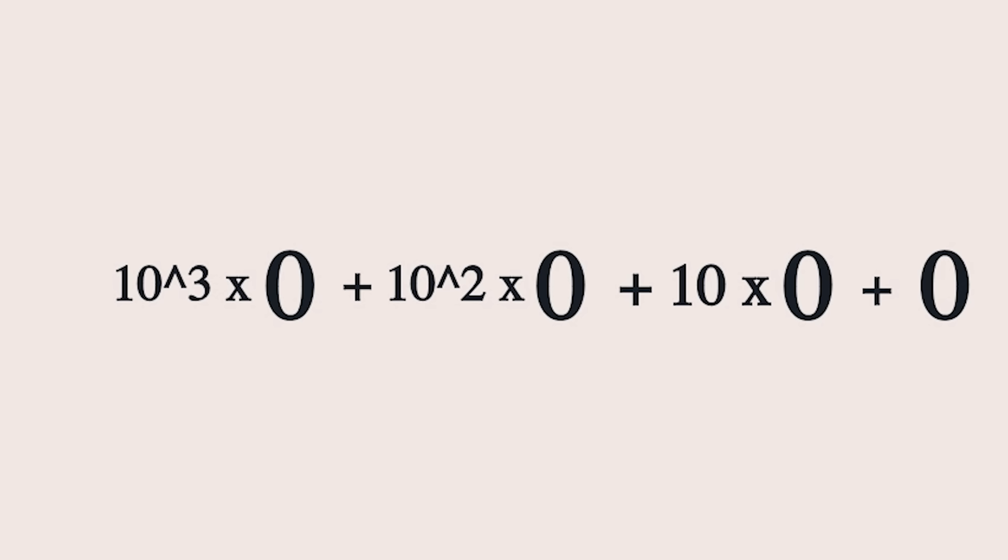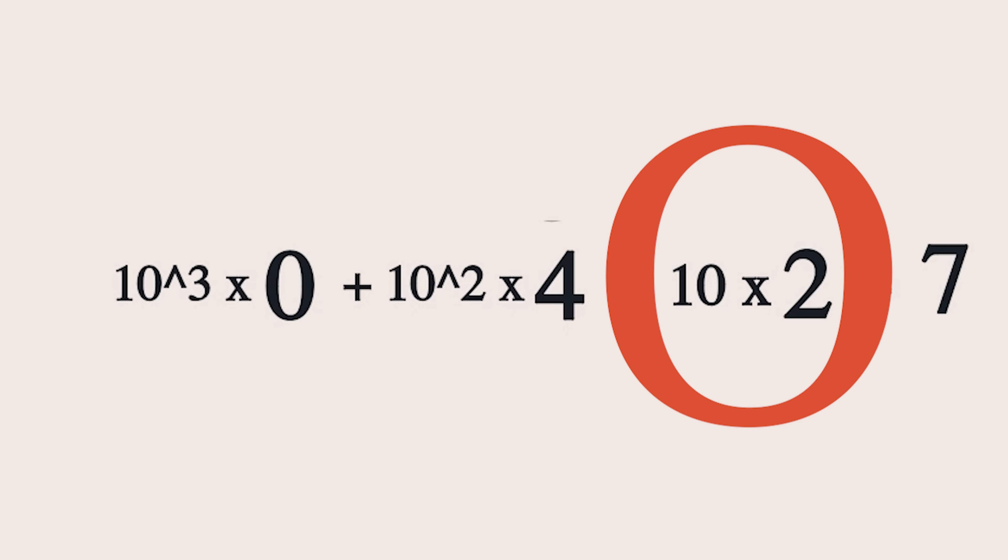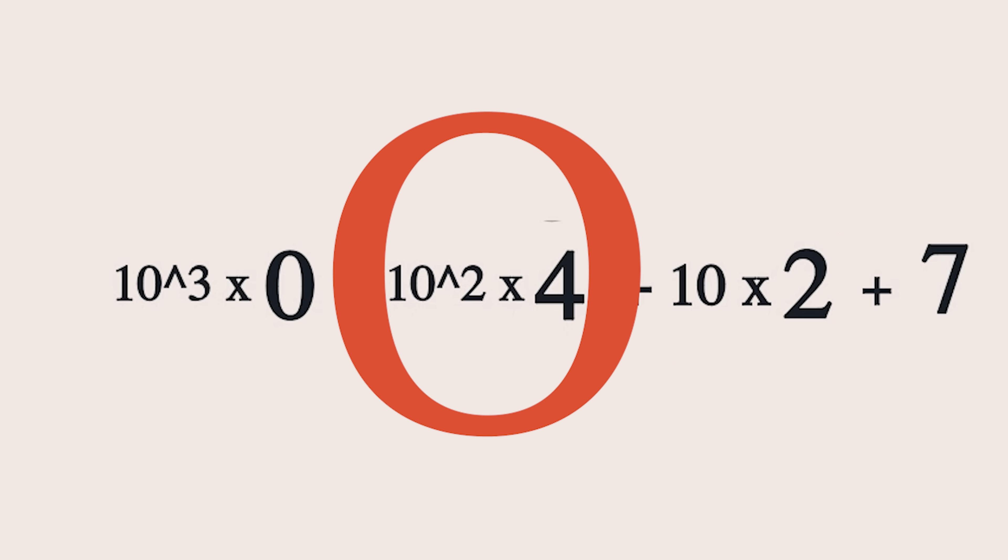So we use base 10 with 0 to 9, and all numbers above 9 are represented with multiplied powers of 10. Take 427. That's 10 to the power of 0 times 7 plus 10 to the power of 1 times 2 plus 10 to the power of 2 times 4.